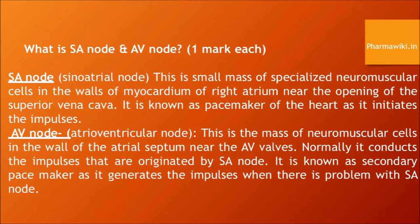CSF — functions of cerebrospinal fluid. Cerebrospinal fluid helps to support and protect the brain and spinal cord, and maintains uniform pressure around them. It acts as a cushion and shock absorber, and also keeps the brain and spinal cord moist.